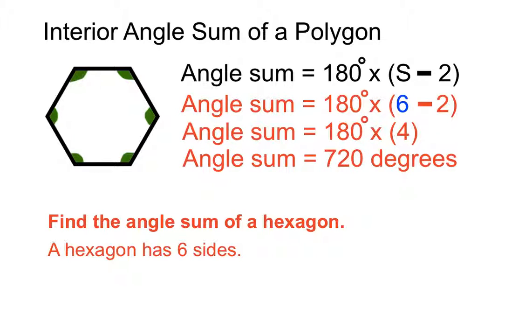So that's the sum of all the interior, all the inside angles of a hexagon, 720 degrees.